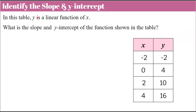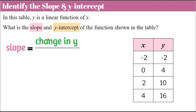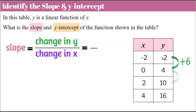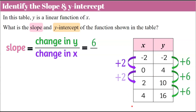Now let's identify the slope and Y-intercept of this function modeled in the table — the same table from the previous question. Y is a linear function of X. To find slope, we use the ratio of change in Y to change in X, our vertical change as a ratio to our horizontal change. We already identified that our change in Y is to repeatedly add 6, and our change in X was to repeatedly add 2. So we have a ratio of 6 to 2.